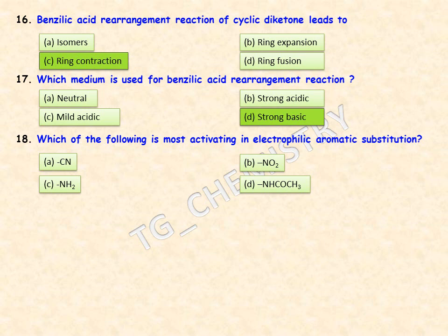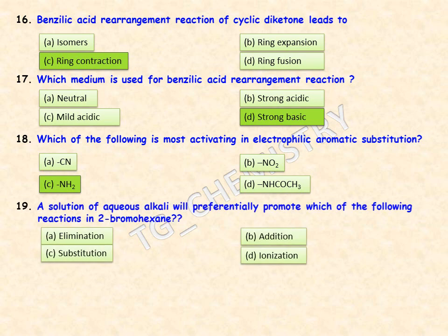Considering the +M (mesomeric) effect of the NH₂ group, it will facilitate electrophilic aromatic substitution, so option C — primary amine — is the right answer among these four options.